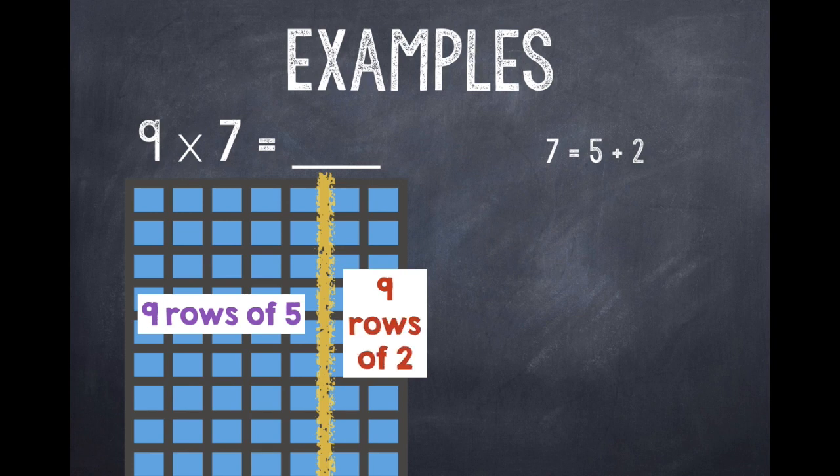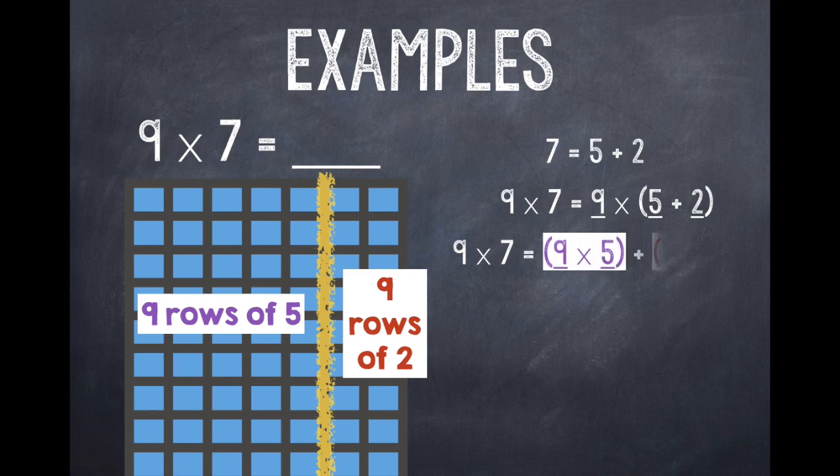I can rewrite my problem as 9 × 7 = 9 × (5 + 2). I'm just replacing the 7 with 5 + 2. Then I distribute that 9 so I have my 9 rows of 5 and my 9 rows of 2. So I'm going to write a multiplication problem for each part of the array. 9 × 7 is equal to 9 × 5 + 9 × 2.